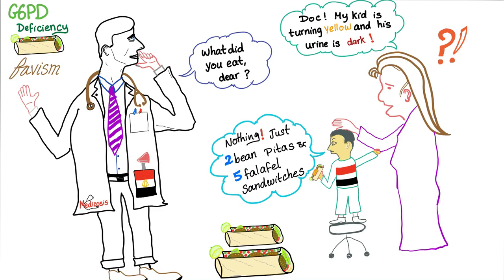Here's a clinical scenario: a doctor in Egypt has a terrified mother saying her kid is turning yellow and his urine is dark. The smart doctor asks what the child ate — and the answer is just two bean pitas and five falafel sandwiches. This is a typical Egyptian scenario. This brings us to Favism, another name for G6PD deficiency, related to falafel. Falafel and Favism share the same Latin root. In Egypt they eat ful (beans) and falafel — so Egyptians with G6PD deficiency are particularly at risk. The doctor advises stopping the beans and falafel, and the child recovers.